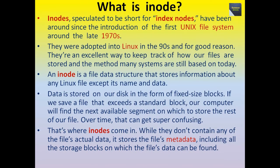Inodes, speculated to be short for Index Nodes, have been around since the introduction of the first UNIX file system around the late 1970s. They were adopted into Linux in the 90s and for good reason. They are an excellent way to keep track of how our files are stored, and the method many systems are still based on today.